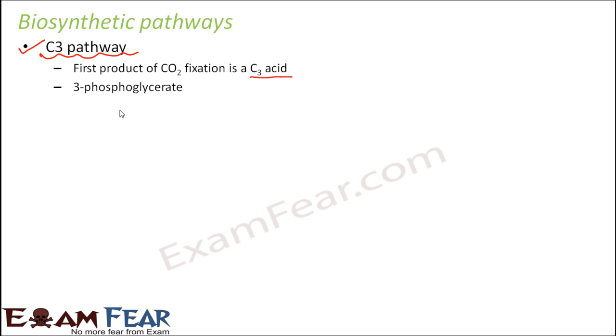So what is that C3 acid? That is 3-phosphoglycerate which is often abbreviated as 3-PGA, that is phosphoglycerate or phosphoglyceric acid whatever you call it. So this is the first stable product of C3 pathway. This pathway is also known as Calvin cycle after the name of the scientist Calvin who did a lot of research on this pathway.